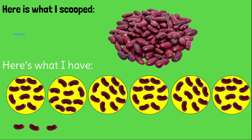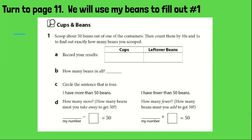I need you to open up your student books now. Turn to page 11. We're going to use my beans to fill out number 1. I actually got 63 — so 6 cups and 3 beans left over. How many beans in all? 63. So I have to circle which sentence is true: I have more than 50 beans, or I have fewer than 50 beans? 63 is more than 50 beans.